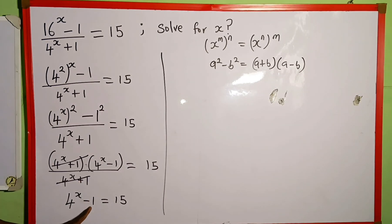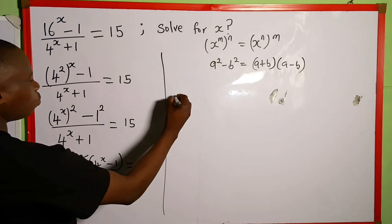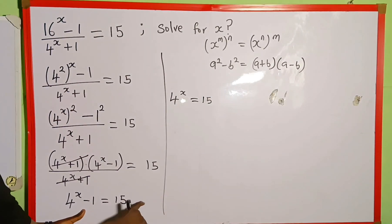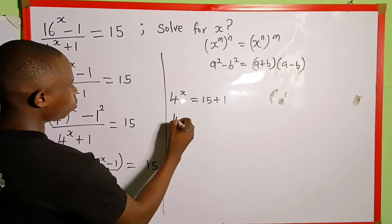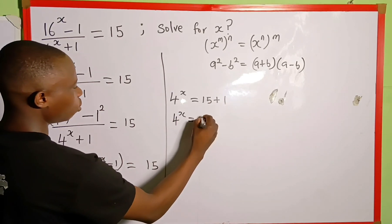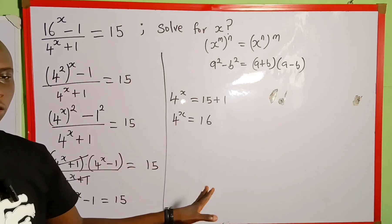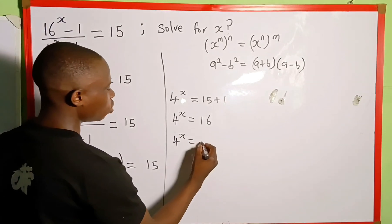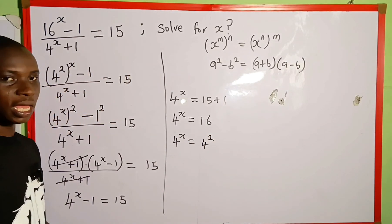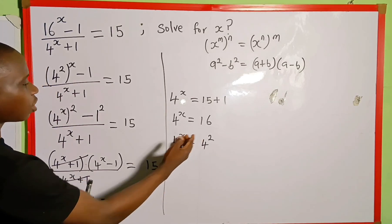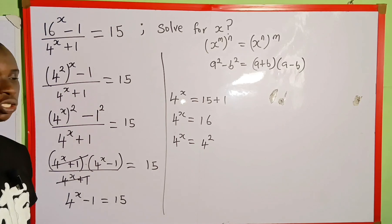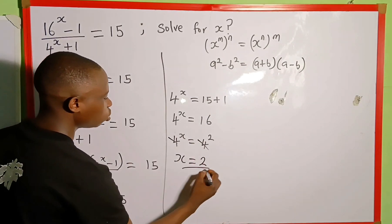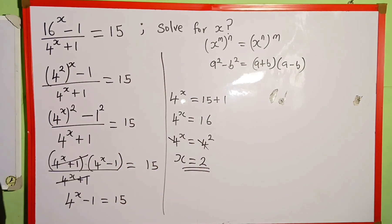Now we take the negative 1 to the right-hand side of the equation. We have 4 to the power of x equal to 15, and when negative 1 crosses to the right-hand side it becomes positive 1. So 4 to the power of x equals 15 plus 1, which gives us 16. We rewrite 16 in index form to the base of 4 as 4 to the power of 2, so the bases are the same. Since the bases are equal, the powers must also be equal, so x equals 2. Therefore, 2 is the value of x that satisfies this equation.